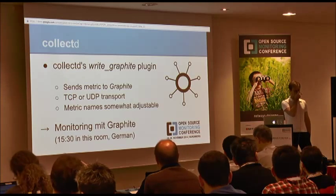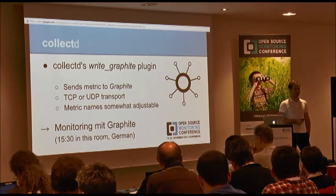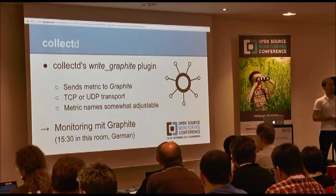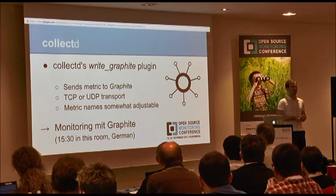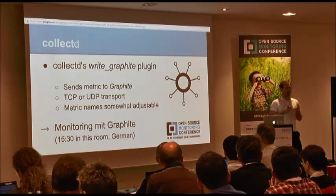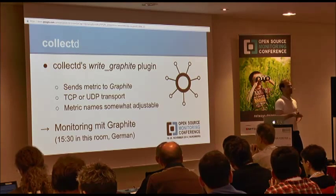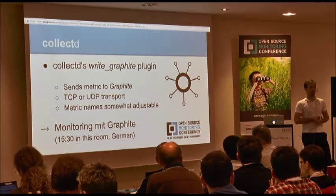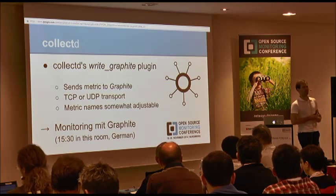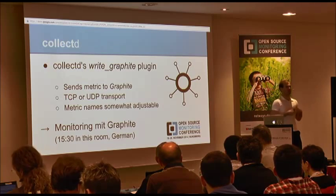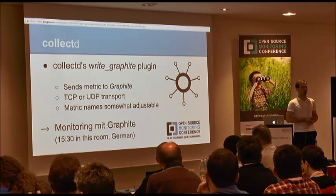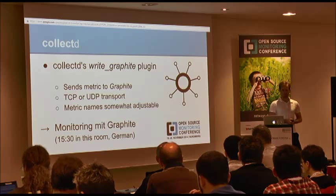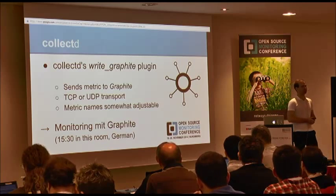Question: Does the write plugin store data locally when it cannot send to the output — i.e., is there caching during a network outage? The answer is no, there isn't. It depends on the write plugin as an implementation detail, but to my knowledge none of the write plugins do this. The best you can get is to use AMQP as a message broker, and then the broker will cache your messages.